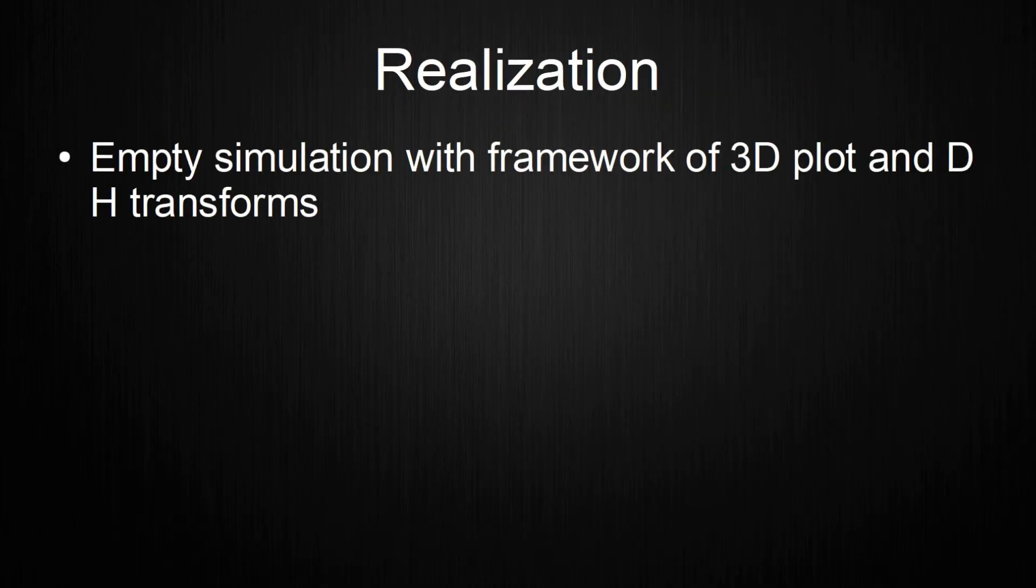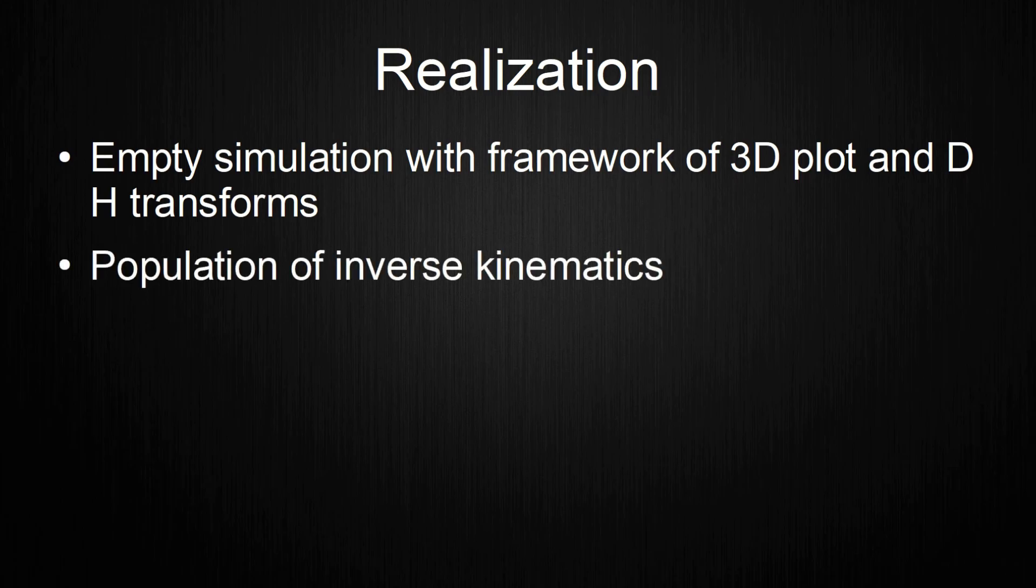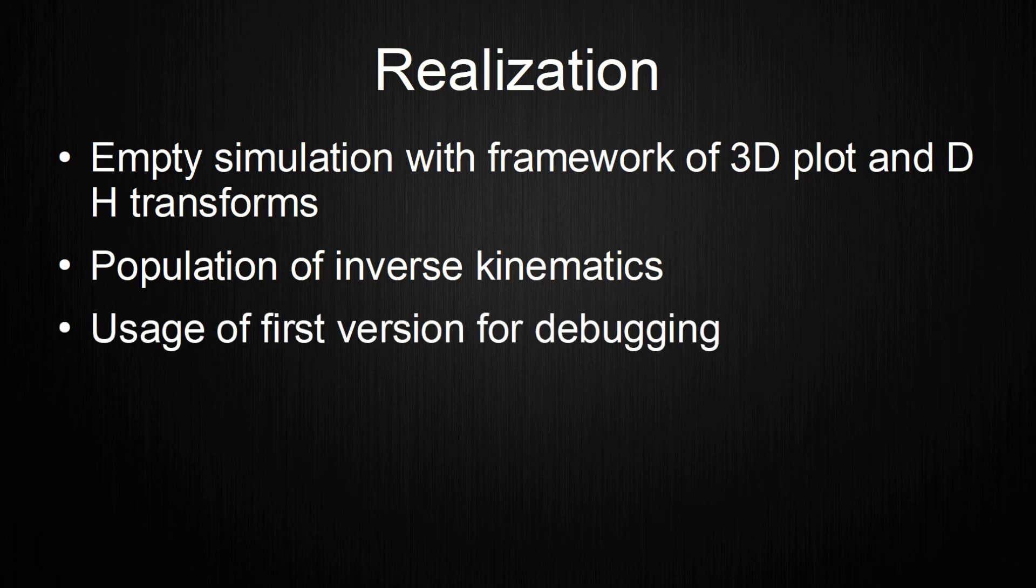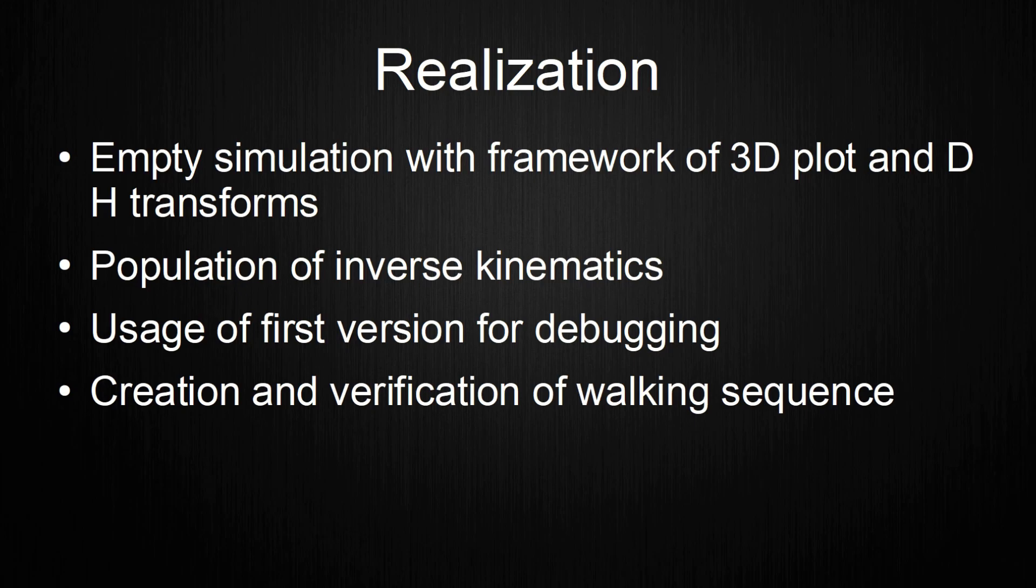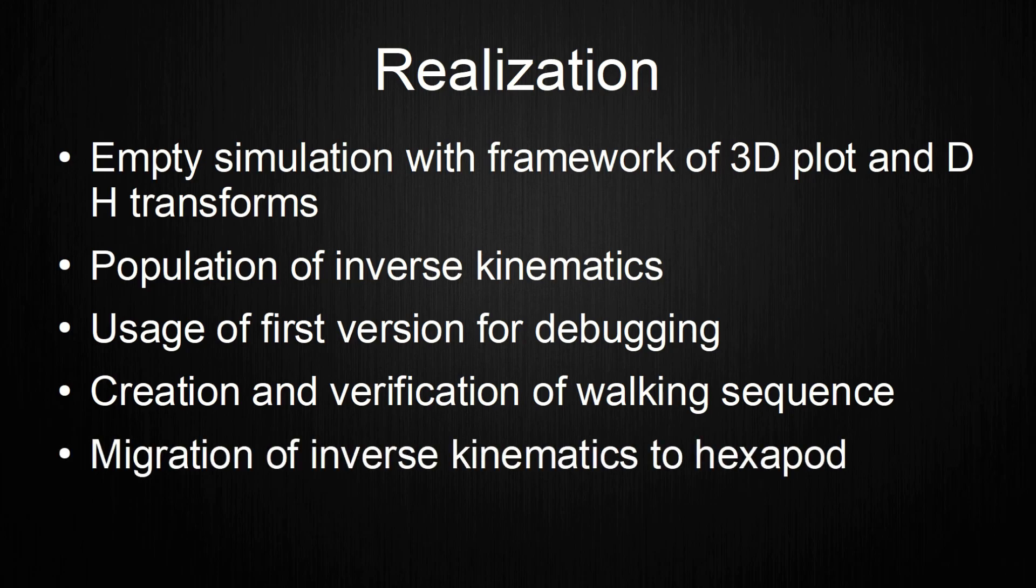The first step is to create the empty simulation. Here I programmed the framework of the 3D plot and the DH transforms to plot the body of the hexapod. I then moved on to populate the inverse kinematics. I already had a first version from some time ago that didn't work. I used this as the first version of the inverse kinematic model and began debugging. After several iterations, I got the model to run as intended. Next up I created the walking sequence and verified it with the simulation. After defining limits to all degrees of freedom to avoid mathematical errors, I migrated the inverse kinematics back to the hexapod in order to do real-world tests.